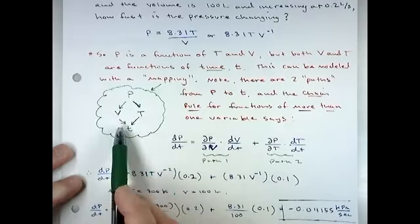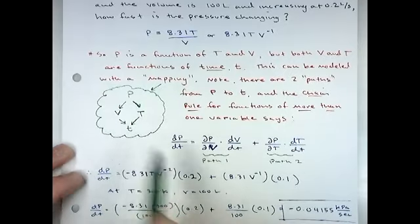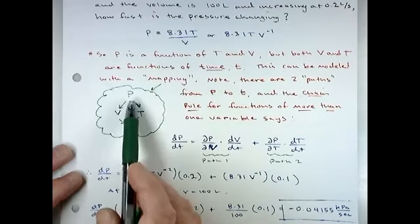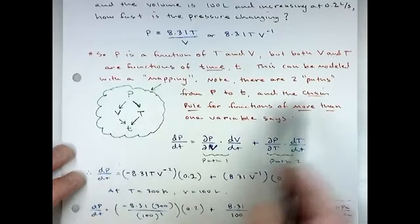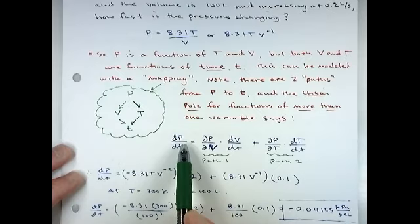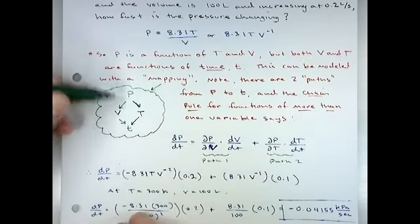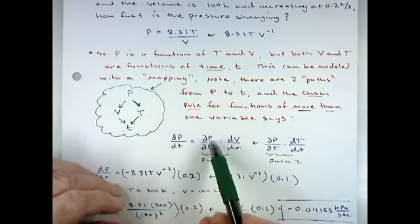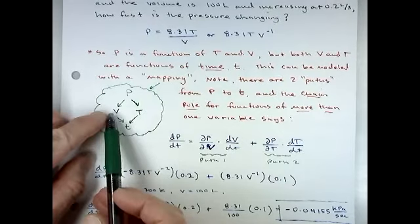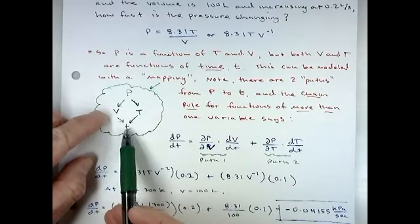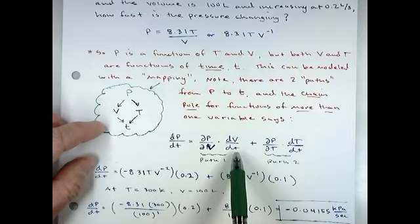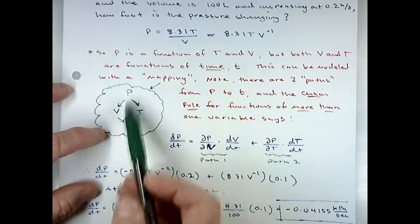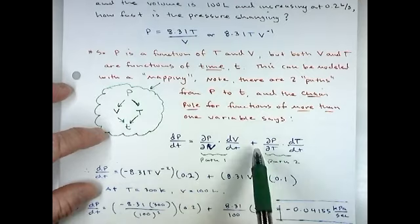According to the chain rule for functions of more than one variable, if we want to take the derivative of pressure with respect to time, we have to go through our paths. There are two paths that take us from P to t. The first path, from P to V, is the partial derivative of P with respect to V. Then we multiply that by the derivative of V with respect to t — that's not a partial derivative because volume was just a function of t. Every time we take a new path, we separate it with addition.